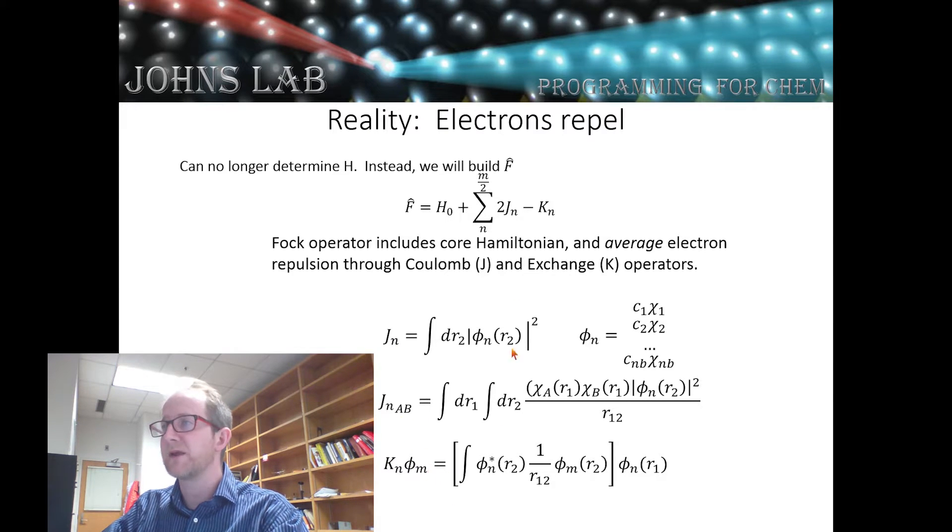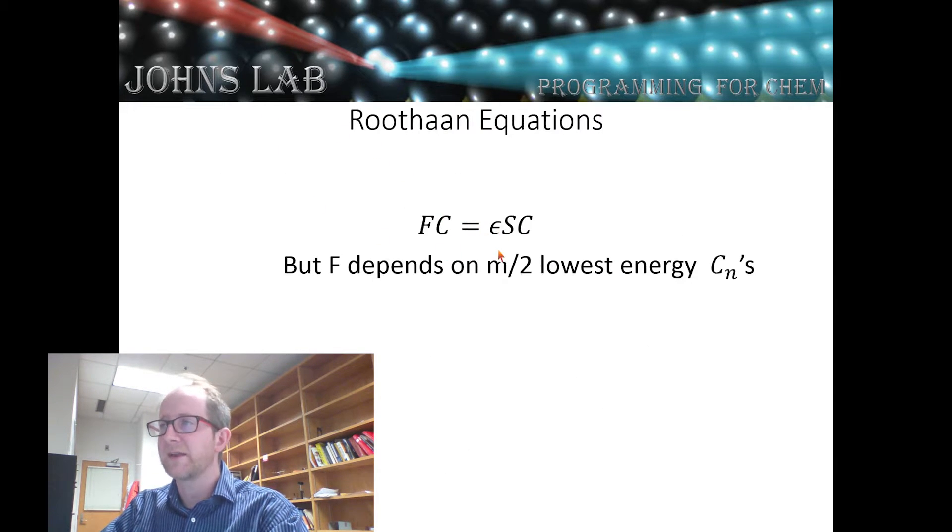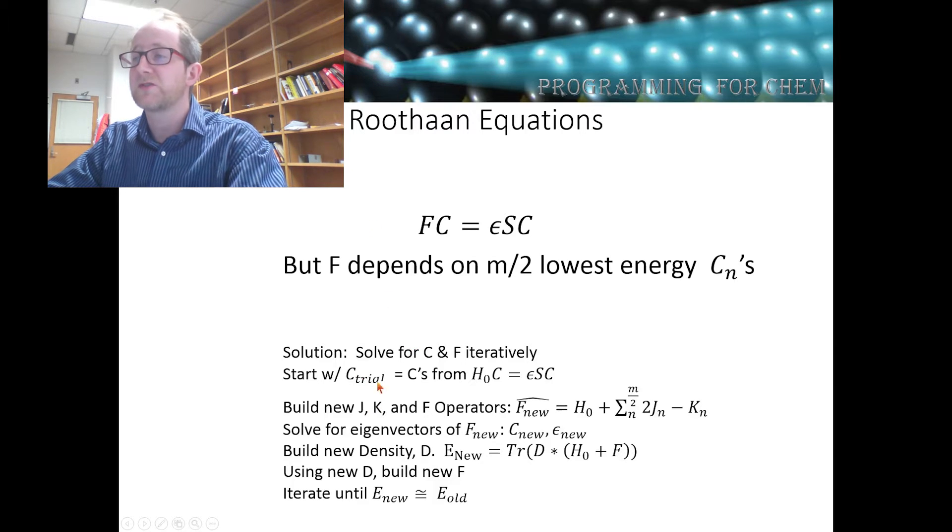Okay. The key portion, the key thing to keep in mind here, though, is that these operators, J and K, depend on the actual orbitals that we have. So when we talk about trying to diagonalize this, our Fock operator F actually depends on the m over 2 lowest energy eigenvectors of itself. Okay. So we have a transcendental equation. And the way that we're going to solve this is through a method called self-consistency. And what we're going to do is we're going to start with a trial set of vectors for C, a trial set of orthonormal vectors. And we're going to use those that are the eigenvectors from our core Hamiltonian.